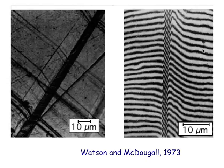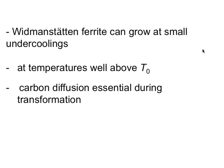When we do these measurements accurately on Widmanstätten ferrite, we note that it has only a small undercooling below the reconstructive transformations and it forms at temperatures above T0. That immediately tells you that it's impossible for it to be a completely diffusionless transformation — you have to form below T0 in order for a diffusionless transformation to be possible. Carbon diffusion is therefore essential during transformation.